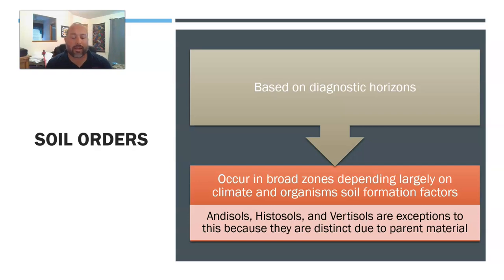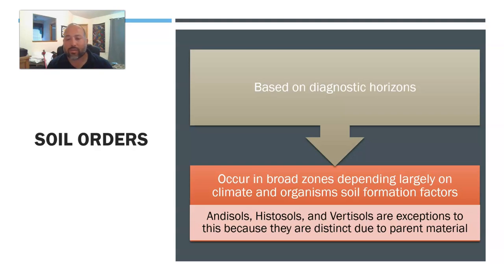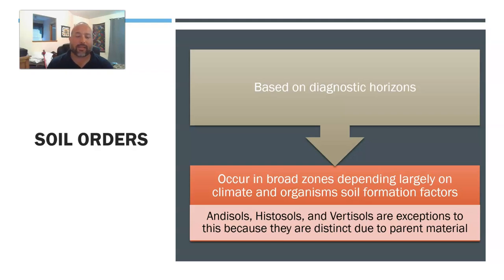Andisols, histosols, and vertisols — those three out of the 12 soil orders are actually different because they depend more on the parent material soil formation factor instead of climate and organisms. Let's look at those 12 soil orders with a brief description and the diagnostic horizon that makes it so. Alfisols are soils with a subsoil accumulation of clay that are moderately weathered, which makes sense because the argillic horizon shows evidence of clay moving from upper to lower levels.